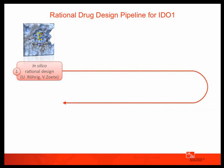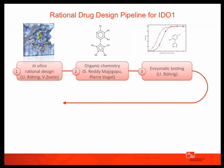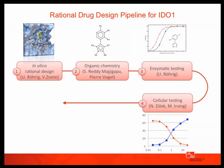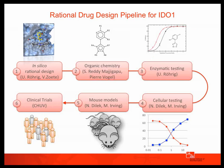How do we go about designing inhibitors for IDO1? The first step is done in silico, mainly by myself and Vincent Suet in the group. We then go with our ideas to the chemists we collaborate with at EPFL. If a compound is synthesizable, they will try to do so. They come back to us with a synthesized molecule, and at the moment I also do the enzymatic testing. Successful compounds are then tested in cellular assays by Nasli, Dilek, and Milita Irving, and can be moved into mouse models. The final goal is to go into clinical trials.